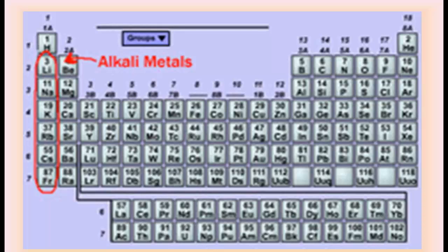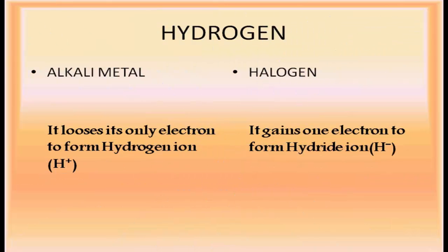Hydrogen can also gain one electron to form a hydride ion, H⁻, which gives characteristics similar to halogens that form halide ions. So hydrogen behaves like alkali metals when it loses its only electron to form H⁺, and it behaves like a halogen when it gains one electron to form the hydride ion H⁻.